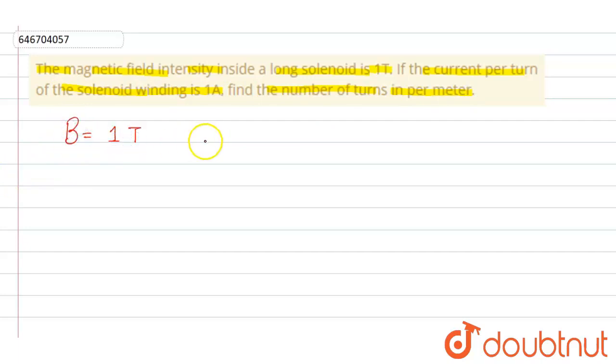And the current is given, that is one ampere, and we have to find the number of turns per unit length.